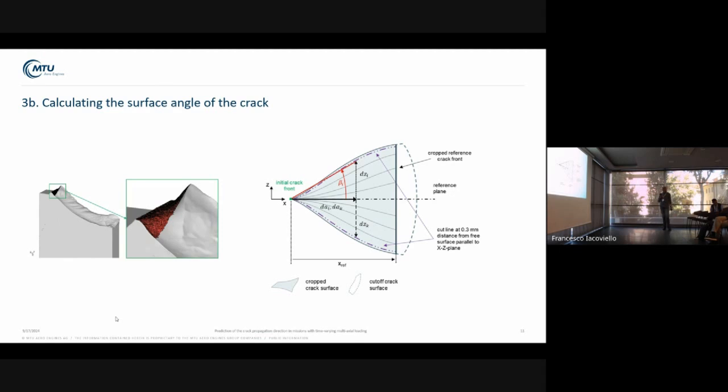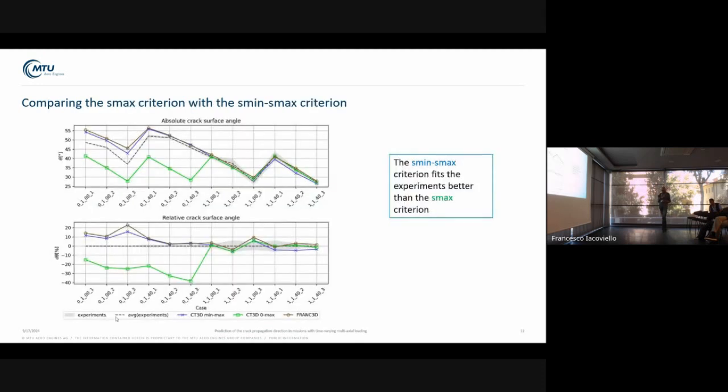Later on, we looked at these results more closely. We looked at some other criteria compared to the numerical results. One of those criteria was to look at the surface angle and calculate the surface angle on both sides of the specimen. Doing that, we observed the following. Here again, you have the test results. The green results are the dominant step criterion.